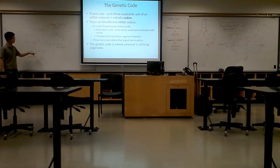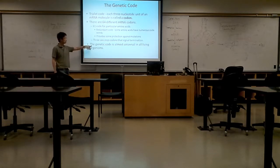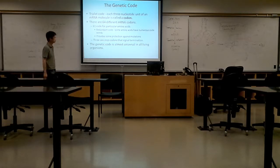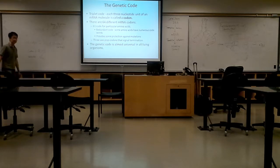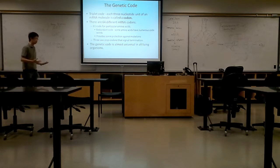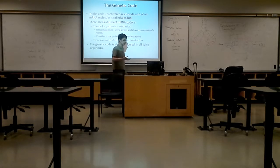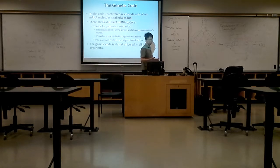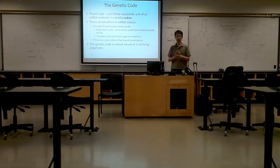Because of this, we call it the genetic code — it is almost universal in all different organisms. Meaning that in our body, AUG translates into methionine. In the cockroach in your kitchen, AUG also translates into methionine.